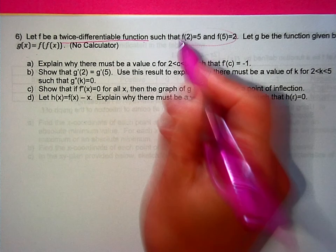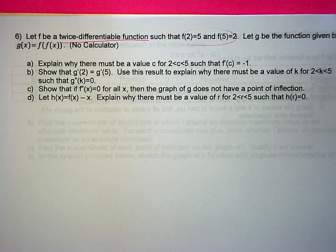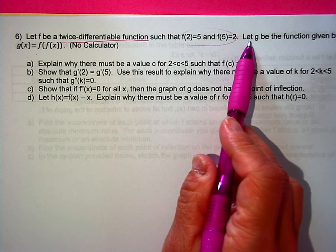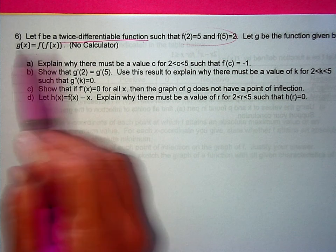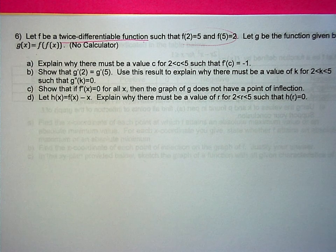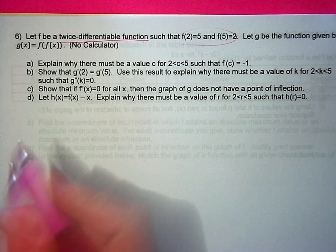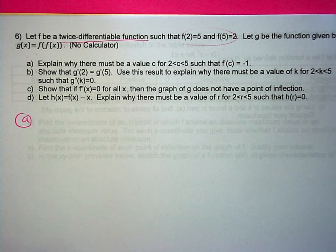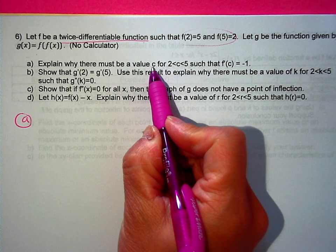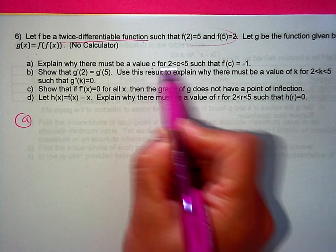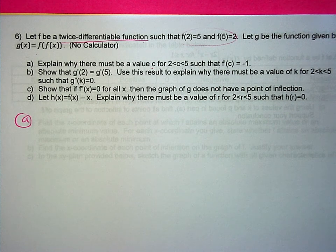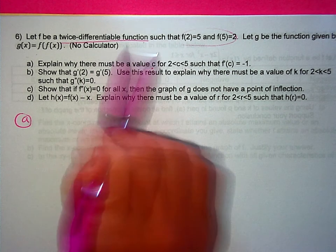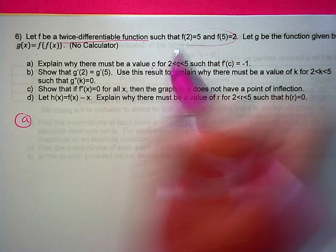The problem gives you two points on the graph of f, and defines a different function g, which is f of f of x — so g is a composite function. Part a says: explain why there has to be a value c, an x-value between 2 and 5, such that the derivative is equal to negative 1.